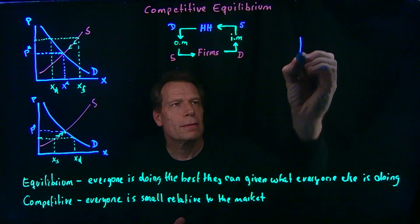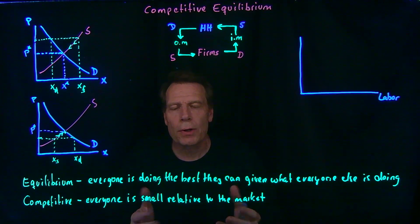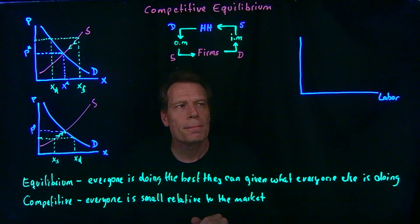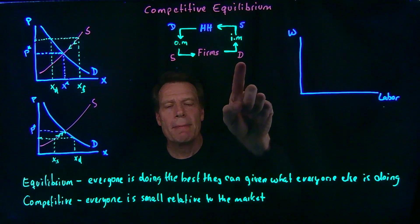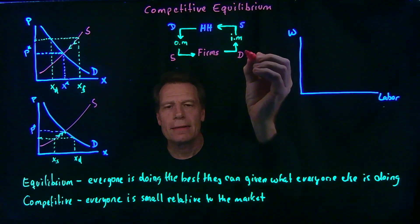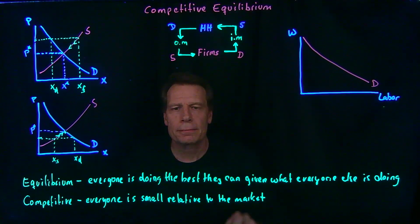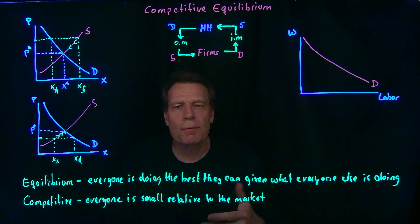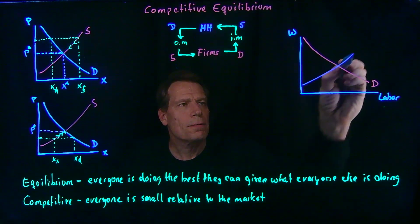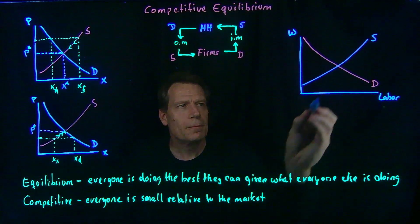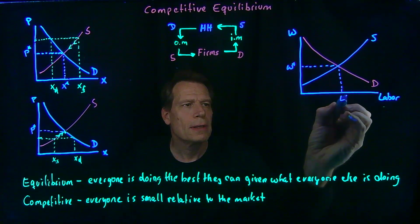We can also look at the input market for labor. We pick a particular labor market — say for low-skilled or high-skilled workers. On the vertical axis we put the wage, the price of labor. The demand for labor comes from firms, so we add firm demand curves to get the market demand curve for labor. The supply for labor comes from households, and we add household supply curves to get the market supply curve for labor. There's an equilibrium wage and an equilibrium number of workers hired at that wage.